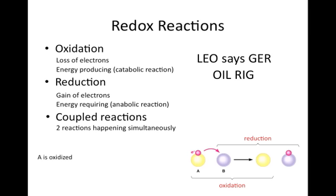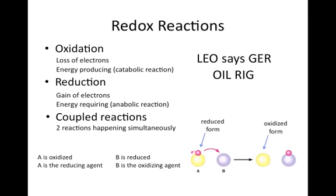A is oxidized because it loses an electron. Since it loses its electron to B, A is a reducing agent because it allows B to be reduced. B is reduced because it gains an electron, and since it takes the electron from A, it is an oxidizing agent because it allows A to be oxidized. The reduced form of a molecule contains more electrons than the oxidized form. Therefore, A on the left with an electron is in the reduced form, and A on the right without an electron is in the oxidized form. B on the left without the electron is in the oxidized form, and B on the right with an electron is in the reduced form.